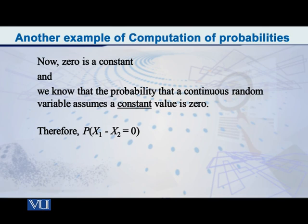It is always in an interval. So therefore, the probability of x1 minus x2 equals 0, in other words, the probability of x1 equals x2, this probability is equal to 0. So this is an interesting thing.